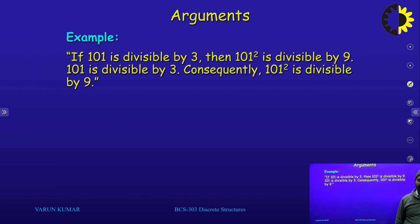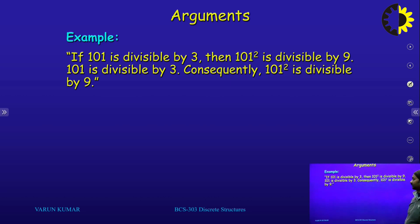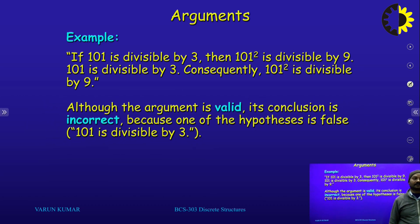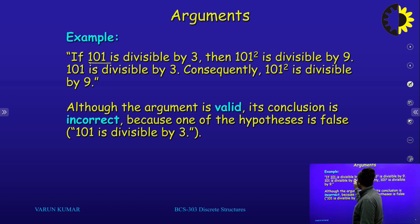If 101 is divisible by 3, then 101 squared is divisible by 9. And 101 is divisible by 3 — consequently 101 squared is divisible by 9. We convert this particular statement into our propositions. Although the argument is valid, its conclusion is incorrect because one of the hypotheses is false — because 101 cannot be divided by 3.